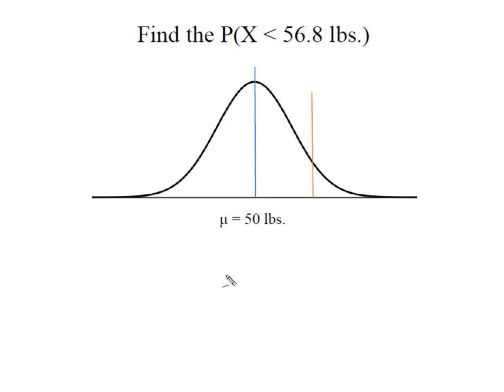So we had our area between the mean here and our value of x. Remember, this is my x equal to 56.8 pounds, and we identified this area as 0.4884.